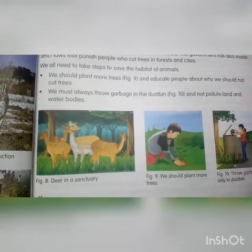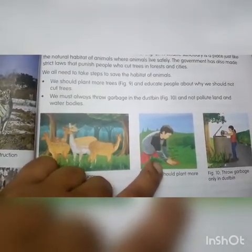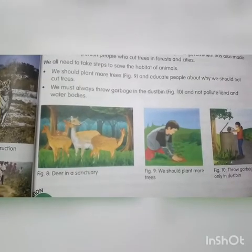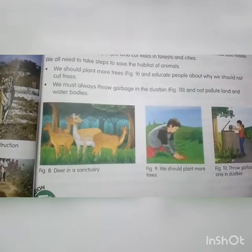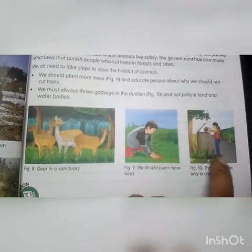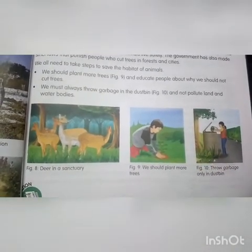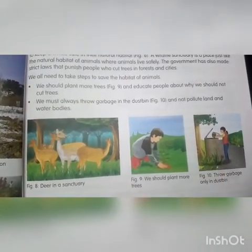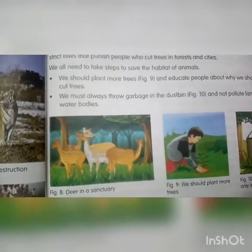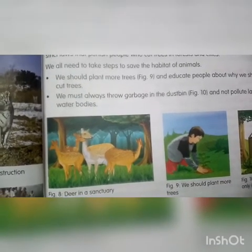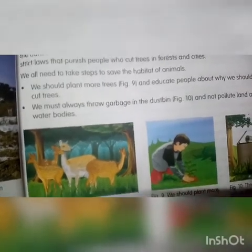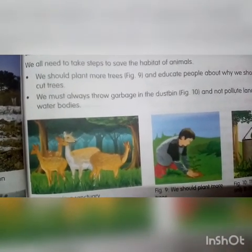We should plant more trees — see in this figure. We should plant more trees and educate people about why we should not cut trees. We must always throw garbage in dustbins and not pollute land and water bodies. So in this way we can protect animal habitat. Thank you.